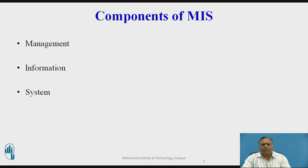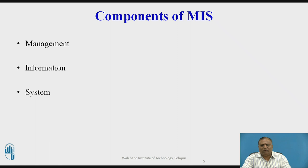Now we are going to see the components of MIS. There are three components of MIS: Management, Information, and System. Management has been defined as the process or activities that describe what managers do in the operation of their organization — plan, organize, initiate, and control operations. They plan by setting strategies and goals, and selecting the best course of action to achieve those goals.